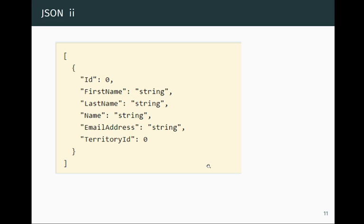Here's an example of a subset of a JSON dataset. You can see one set of six key-value pairs enclosed in curly braces. We could have a comma after the closing brace and then a second set of six key-value pairs. If all sets have the same keys, you can think of each block as a row in a dataset, so you can imagine how this converts to a data frame with six columns and as many rows as there are blocks inside curly braces.